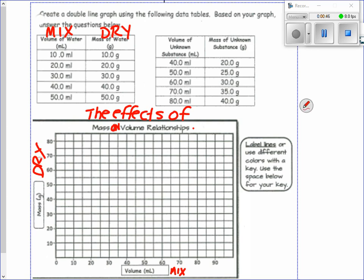First thing you do is you plot your points. Now it says label your lines with different colors with a key. So let's use water. This is going to be red. Let's go. I'm going to do water first.